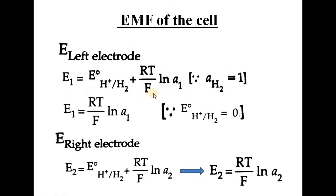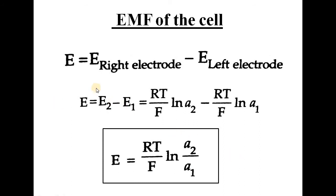The activity of hydrogen is taken as 1 since the gas is at 1 atmosphere pressure. The standard electrode potential of the hydrogen electrode is taken as 0. So E1 = RT/F · ln(A1). Similarly, applying the Nernst equation to the right hand side, E2 = RT/F · ln(A2). The net EMF of the cell is E_RHS − E_LHS (E cathode − E anode), giving E = RT/F · ln(A2/A1).